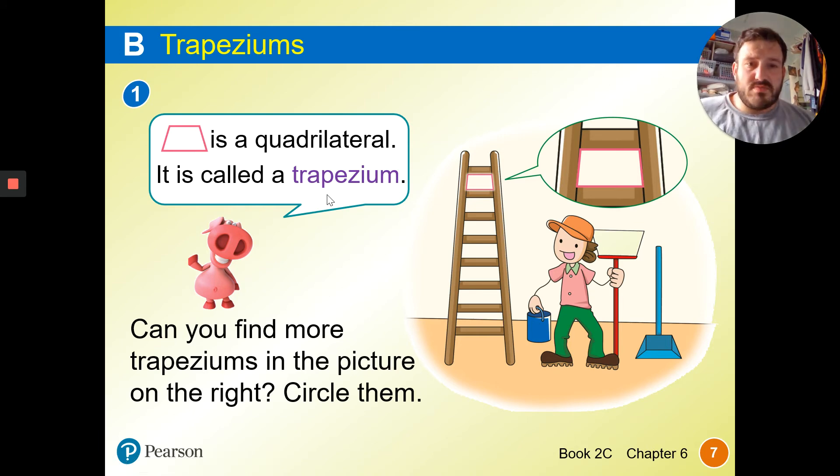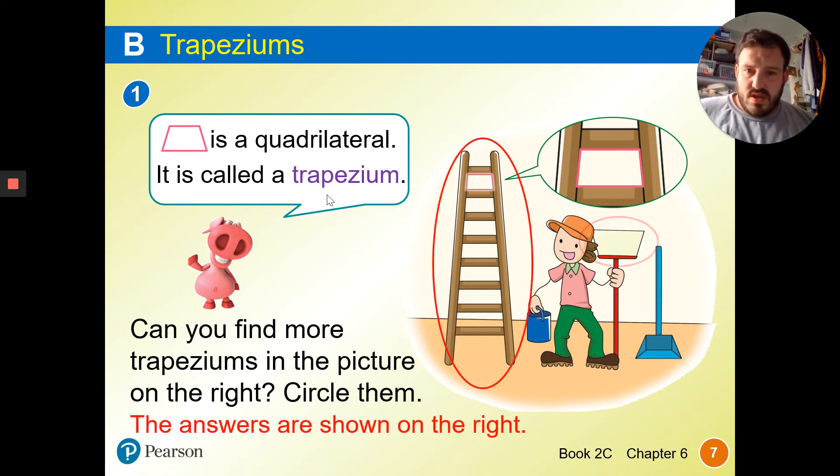Can you find more trapeziums in this picture? The answer is shown on the right. All of these are trapeziums, and this broom is a trapezium, and we can see that this dustpan here is also a trapezium.